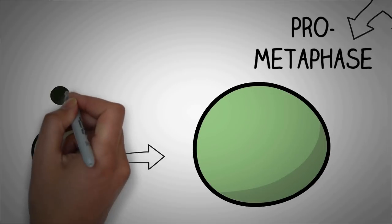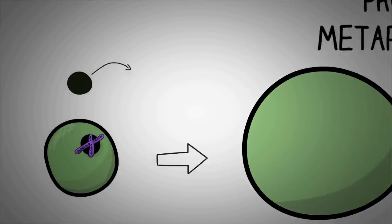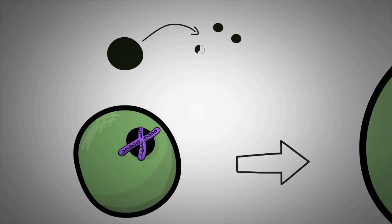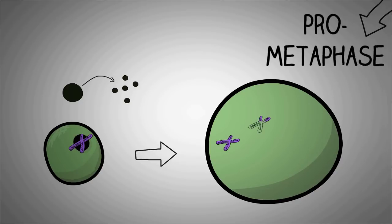It breaks up into small vesicles which are later used to make the nuclear membrane of newly formed nuclei. Due to this, the chromosomes are now lying freely in the cytoplasm of the cell.